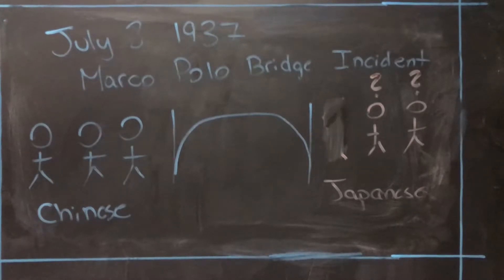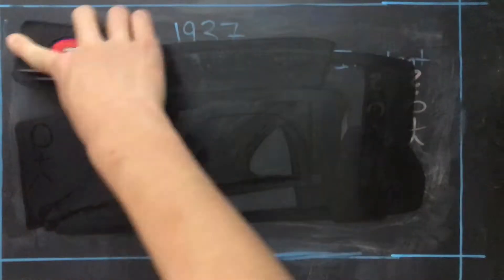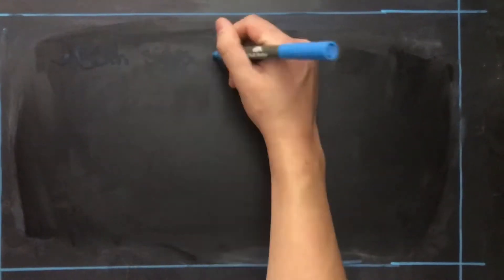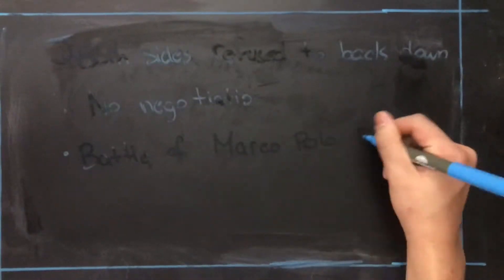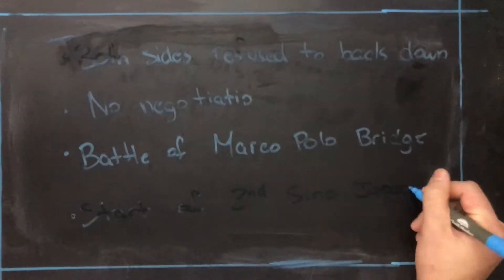This event was nicknamed the Marco Polo Bridge Incident after the bridge that separated the Chinese territory and the Japanese territory. It is also widely regarded as the start of the Second Sino-Japanese War.